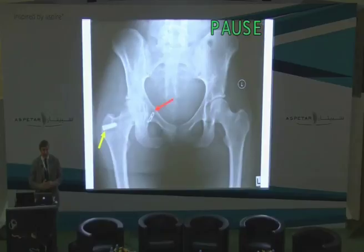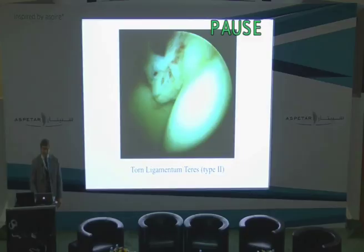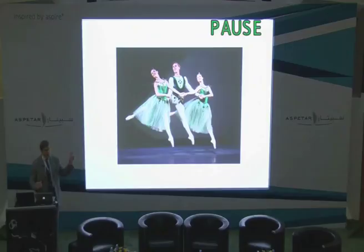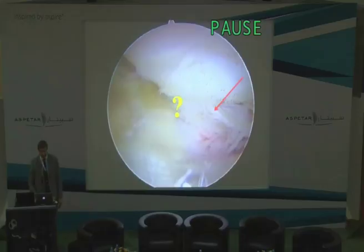For the partial tear, you can simply take a little stump away. If you feel there's ligamentum incompetence, you can do what's called a thermal shrinkage — that is, you can tighten it up. But be very careful, because if your profession depends on external rotation — and both those ladies have had a hip scope — you've got to be very careful in terms of how far you tighten it up, because you will limit external rotation quite significantly. When it comes to the degenerate ligamentum, you basically treat the cause of the degeneration and not so much the ligamentum.